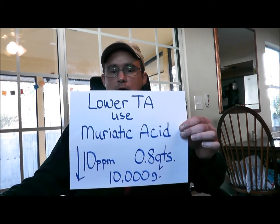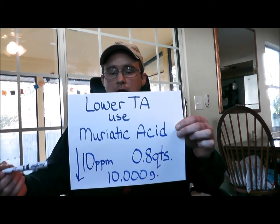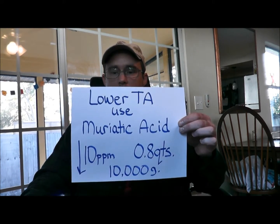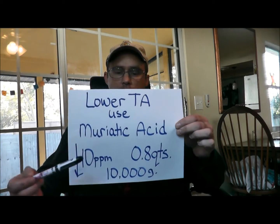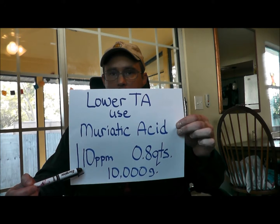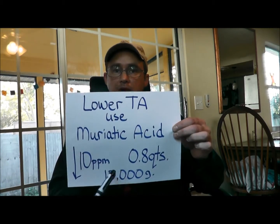The first cause is maybe you're just using too much acid. To lower your total alkalinity, you can use muriatic acid, which I recommend, or you can also use dry acid, which is sodium bisulfate. To lower your alkalinity 10 parts per million, you're going to use 0.8 quarts per 10,000 gallons. If you want to lower it 20 parts per million, simply double the amount. If you have a 20,000 gallon pool and want to lower it 10 parts per million, you've doubled the gallons, so simply double the adjustment. So again, you might be using too much acid.